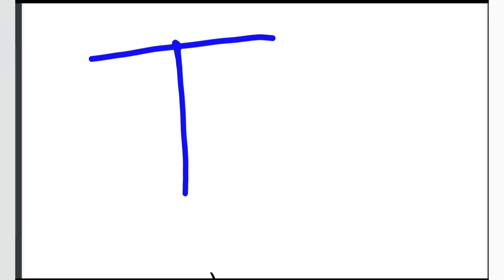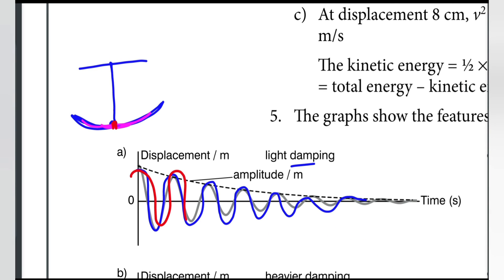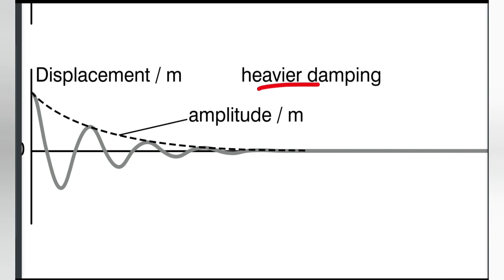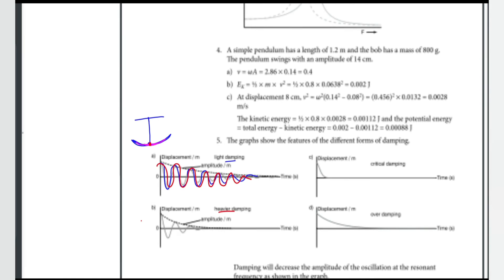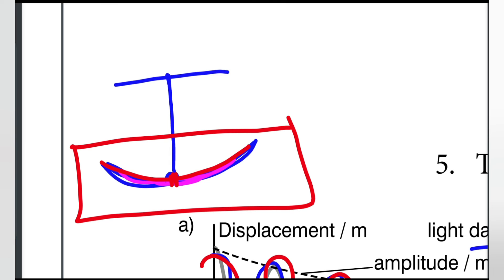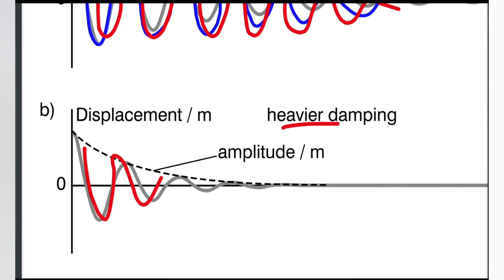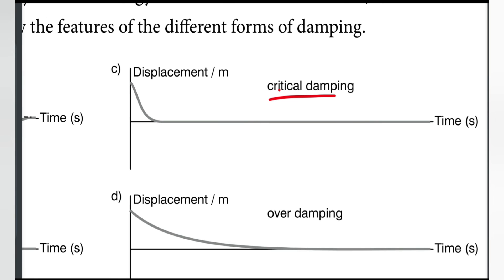Under light damping, the object oscillates with decreasing amplitude — like a pendulum gradually slowing down. For heavy damping, the system returns to equilibrium slowly without oscillating. For critical damping, the system returns to the equilibrium position in the shortest possible time.